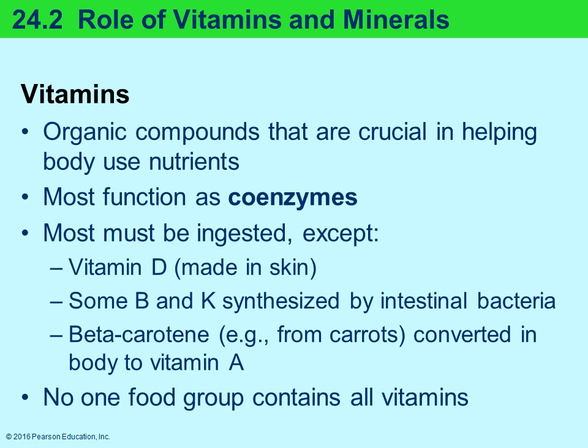Vitamins and minerals are micronutrients. Most vitamins are organic compounds that function as coenzymes — they have to assist the enzyme in order for reactions to occur. Most must be ingested, but there are exceptions: Vitamin D is made in the skin; some B vitamins and Vitamin K are made by bacteria in your intestines; and Vitamin A requires ingestion of beta-carotene, which the body then converts to Vitamin A. Beta-carotene is found in orange vegetables like carrots, squash, and sweet potatoes.